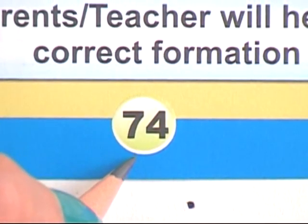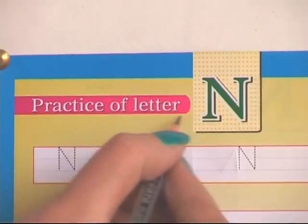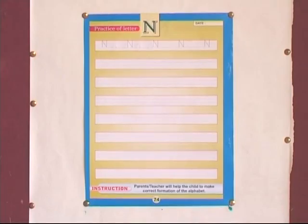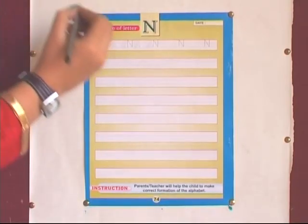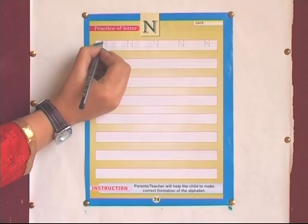Page 74. Practice of letter N. In the given page, children will write down letter N speaking the verbal clue.